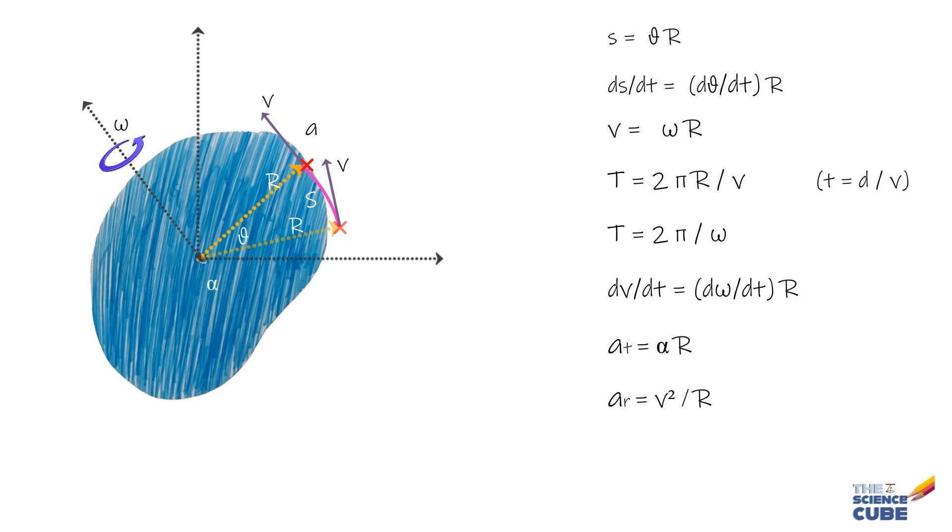Now, if we substitute for V from this equation, we can write this as AR equals V squared upon R equals omega squared R. Remember, for a rotating body, the linear acceleration of a point has two components: the radial component AR and the tangential component AT.